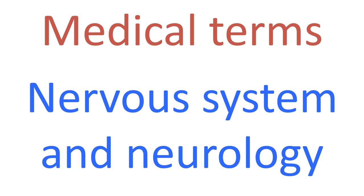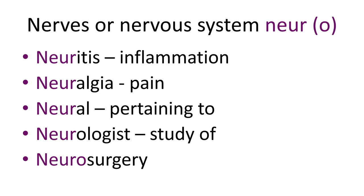Welcome to this presentation where we're going to be looking at terminology related to the nervous system and the topic of neurology. An obvious place to start is with the prefix 'neur' or 'neuro'. It comes from Greek — 'neuron' is the Greek word for nerve — but it's also related to a very similar Latin word, 'nervus' (N-E-R-V-U-S). It means to do with nerves, individual nerves, or the nervous system, so it's quite a widely applicable prefix.